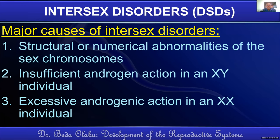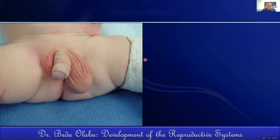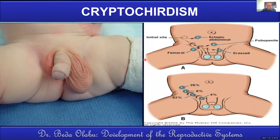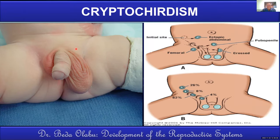Apart from intersex disorders, other disorders affecting the genitalia include cryptorchidism — undescended testes — which most often is located within the inguinal canal, or could be high in the scrotum or in the abdomen itself.